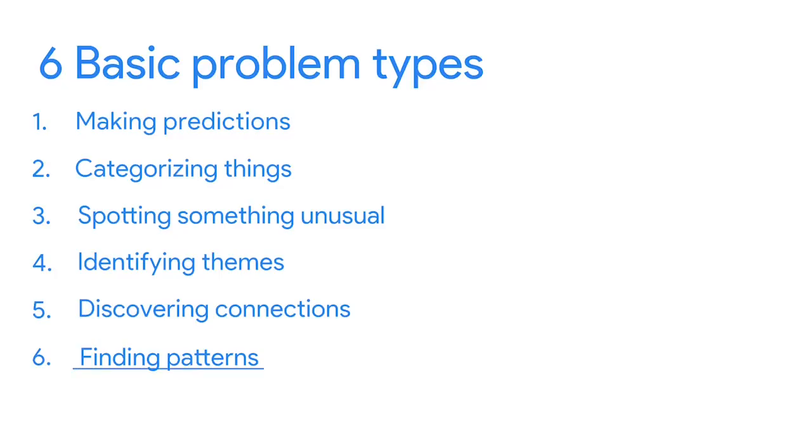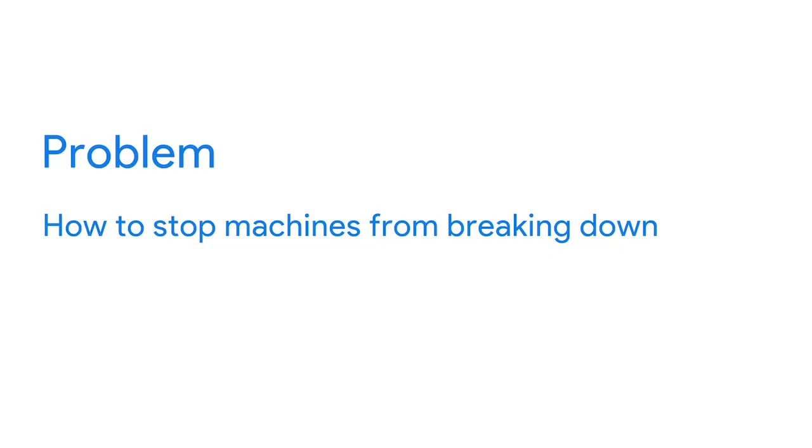Our final problem type is finding patterns. Oil and gas companies are constantly working to keep their machines running properly. The problem is how to stop machines from breaking down. Data analysts can look at patterns in the company's historical data — for example, investigating how and when a particular machine broke down in the past and generating insights into what led to the breakage. In this case, the company saw a pattern indicating machines began breaking down at faster rates when maintenance wasn't kept up in 15-day cycles. They can then track current conditions and intervene if any of these issues happen again.